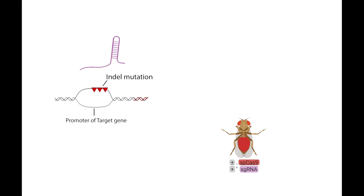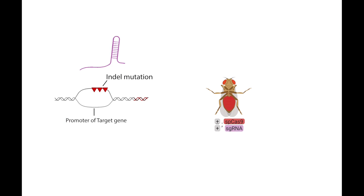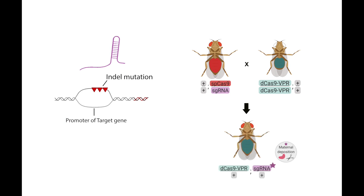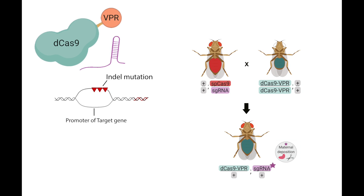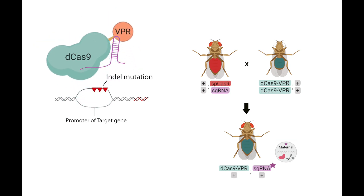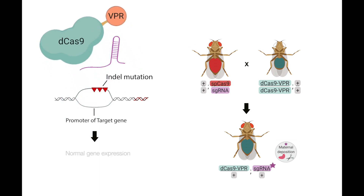Now that we have a fly with a protected single guide RNA targeting site, when we mate it to a fly that expresses dCas9-VPR, we get progeny that carries single guide RNA, Cas9, and dCas9-VPR. Since the single guide RNA binding site is mutated, neither dCas9 nor single guide RNA can bind. Therefore, the expression of the endogenous gene will not be altered, and the fly will survive.